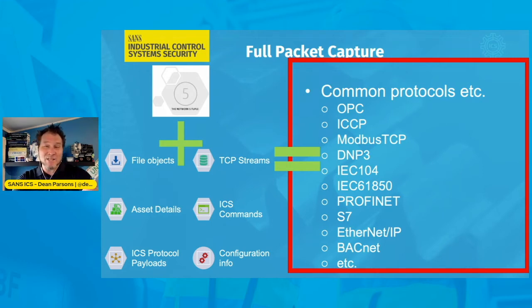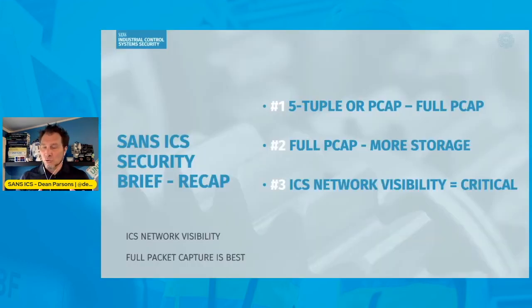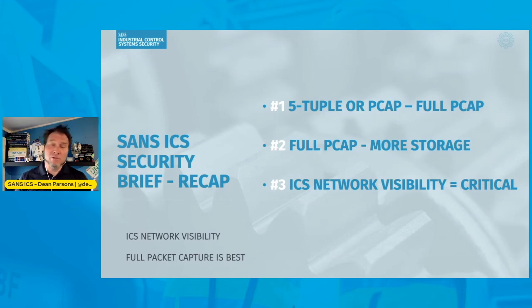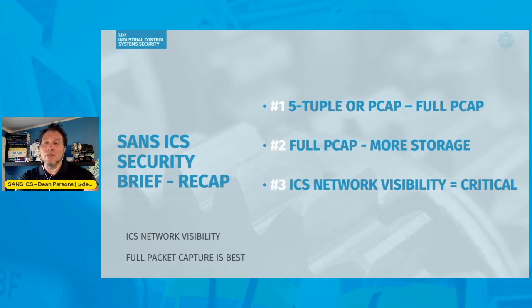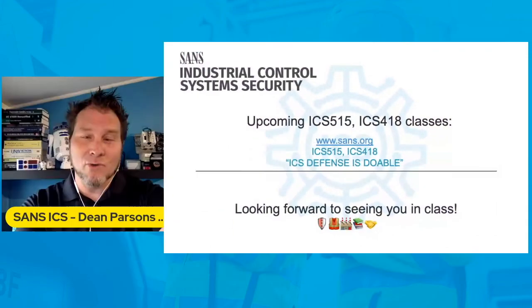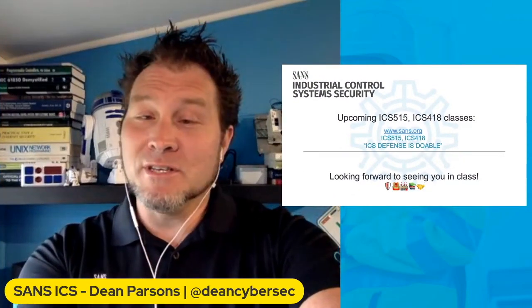To recap for today's brief: the 5-tuple is a great place to start, but it does not give you what you're looking for to do the most effective ICS incident response or threat detection — though it's a great place to start. When you progress to full packet captures, you will require more space, but that's okay. Progress there when you can. Whether you go with the 5-tuple or full PCAP, you're starting to obtain network visibility for the control system, and that is critical. That's all we have for today — super happy you were able to connect, and hoping to see you in class soon.